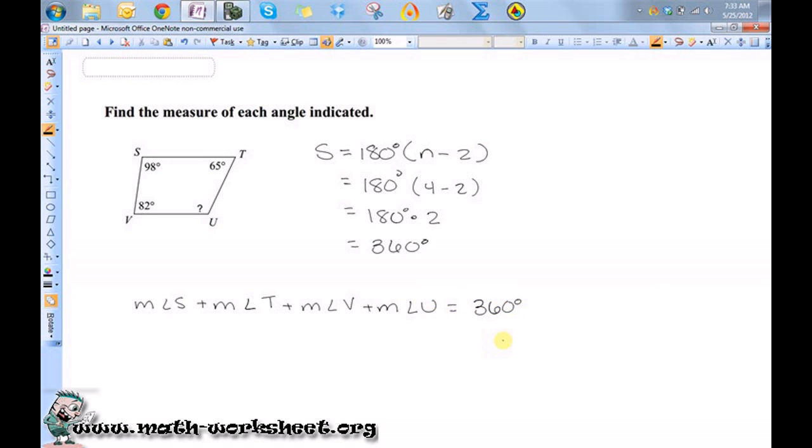So let's just substitute these values in. So 98 degrees, plus 65 degrees, plus 82 degrees, plus the measure of angle u, equals 360.